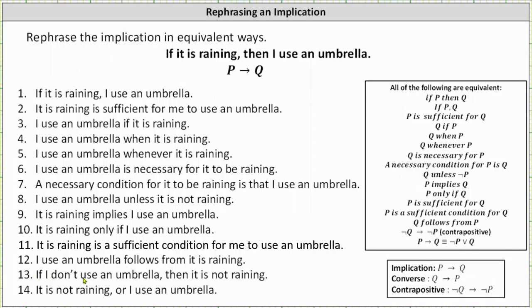Number 13, if I don't use an umbrella, then it is not raining. And finally, number 14, it is not raining or I use an umbrella.